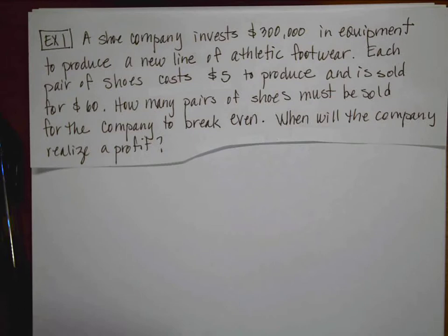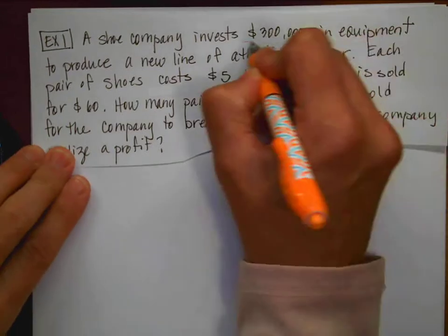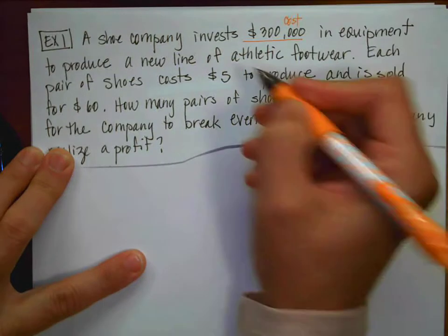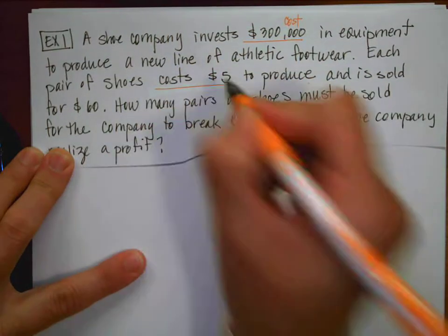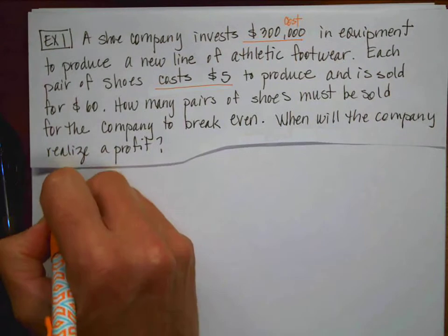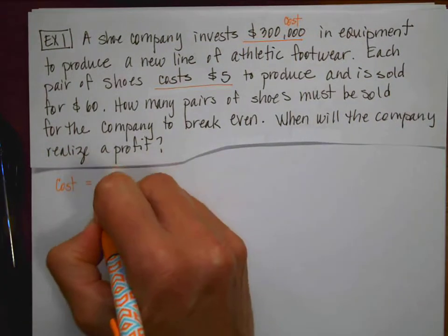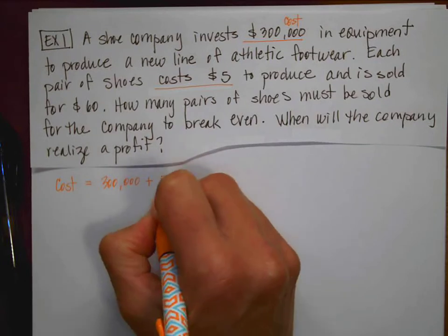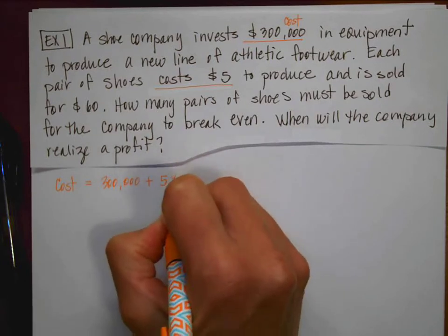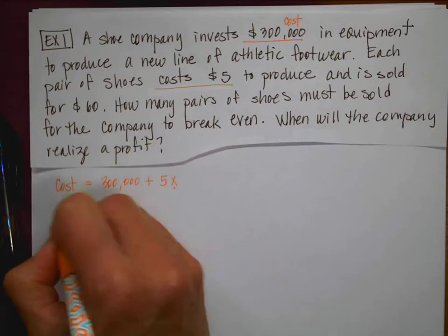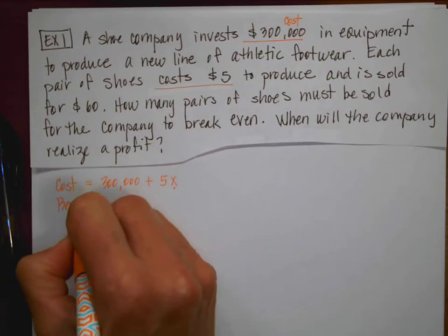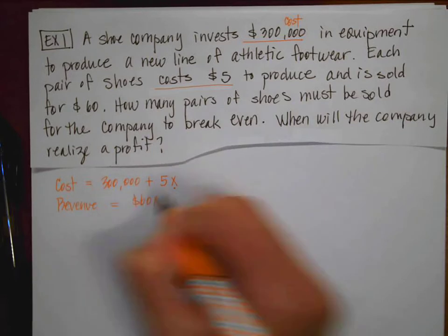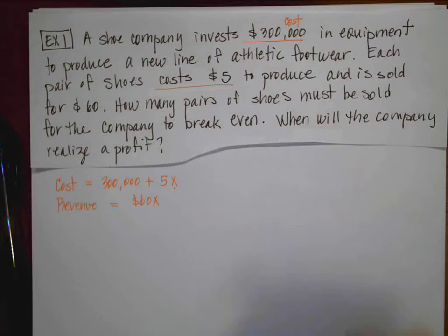All right. So a couple of things that are important to notice. I'm going to invest $300,000. So that is a cost. And it costs $5 to produce. So if I wrote my cost function, it would have a y-intercept of $300,000 and it's going to cost me $5 to produce every pair of shoes.